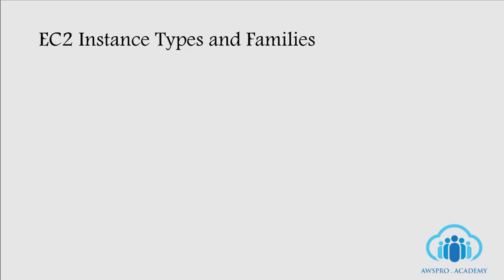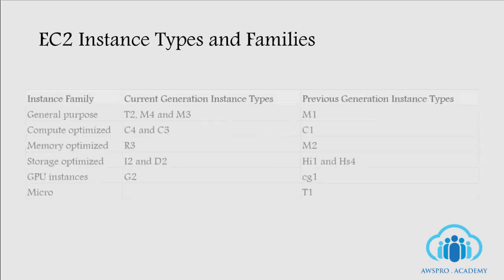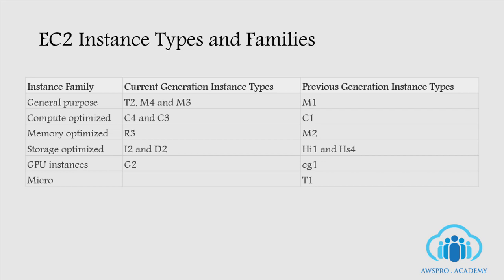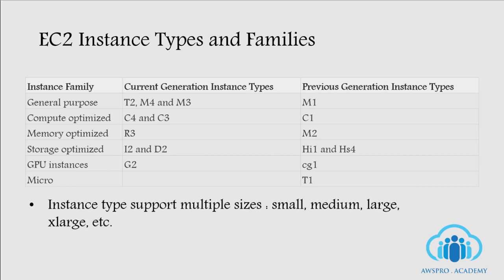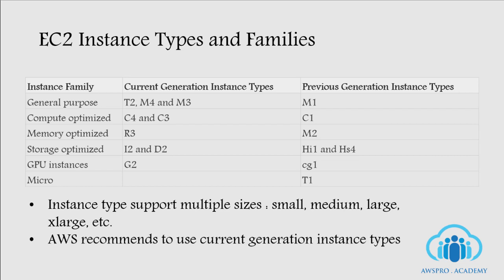Let's move on and see the different instance families and instance types. The five main instance families are: General Purpose for common usage, Compute Optimized for better compute performance, Memory Optimized for memory-intensive applications, Storage Optimized for better input/output and disk throughput, and GPU for graphics or GPU compute workloads. Micro is not considered a separate instance family — it belongs to the general purpose instance family. Focus on the current generation instance types for exam purposes.